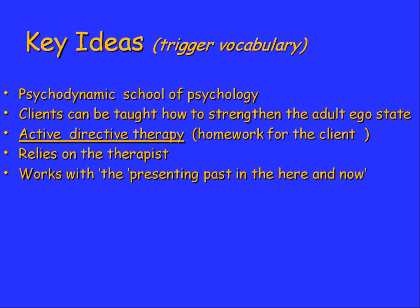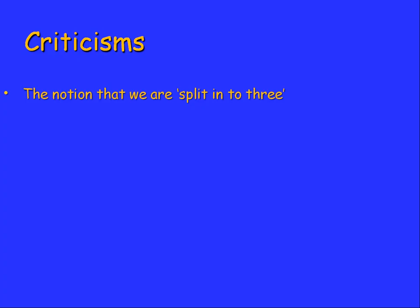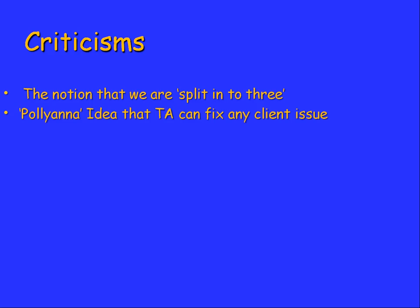There are some criticisms of TA. One is that we're split into three — parent, adult, and child — and critics ask how we can be a whole person if we're divided into three parts. There's also a bit of a Pollyanna idea in TA that it can fix any client issue. At Level 2 the main criticism noted is that it claims to be able to fix any client issue, though the debate gets deeper as you move through the courses.